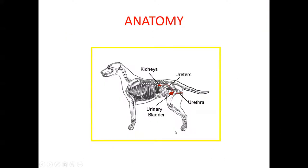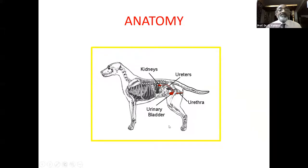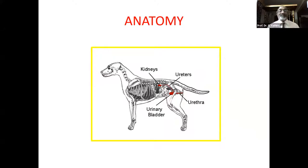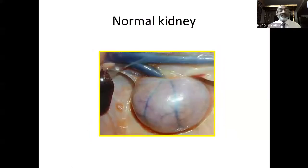Let us look at the anatomy briefly. Kidneys are on either side, with the ureters, urethra, and the urinary bladder.